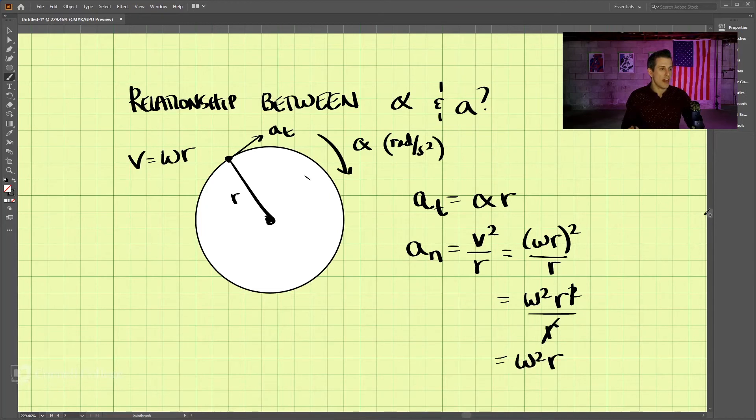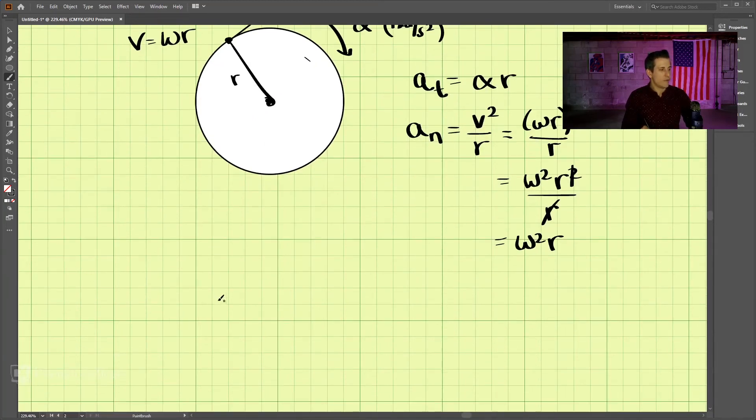So with that, we have our tangential and normal components to the acceleration vector. If we want to write this as a vector, we have the acceleration in the tangential direction plus the acceleration in the normal direction.